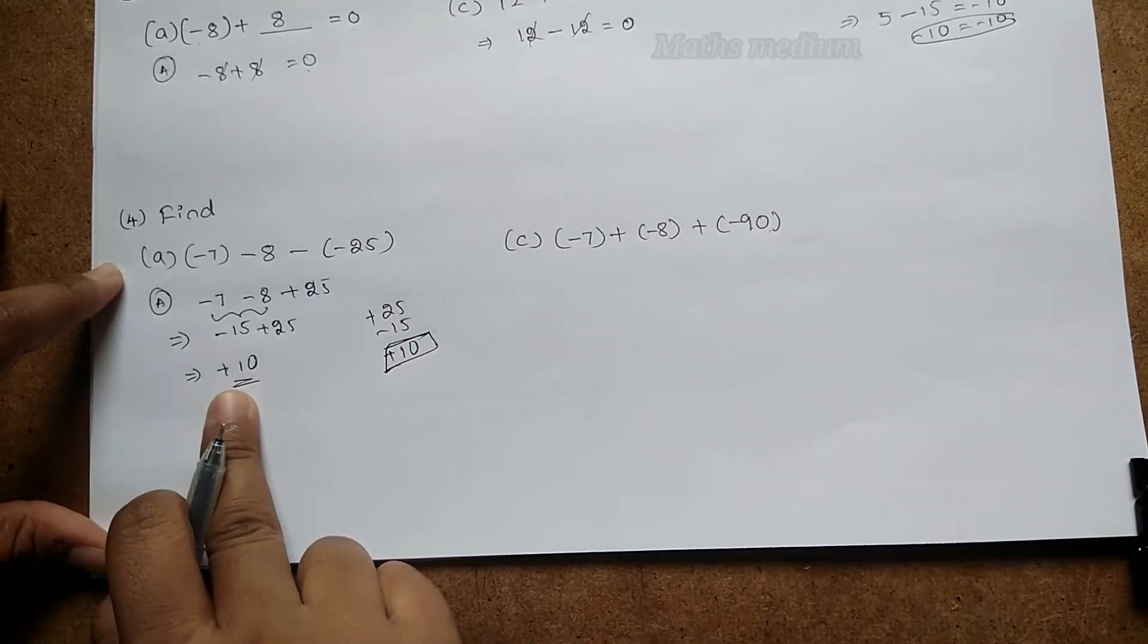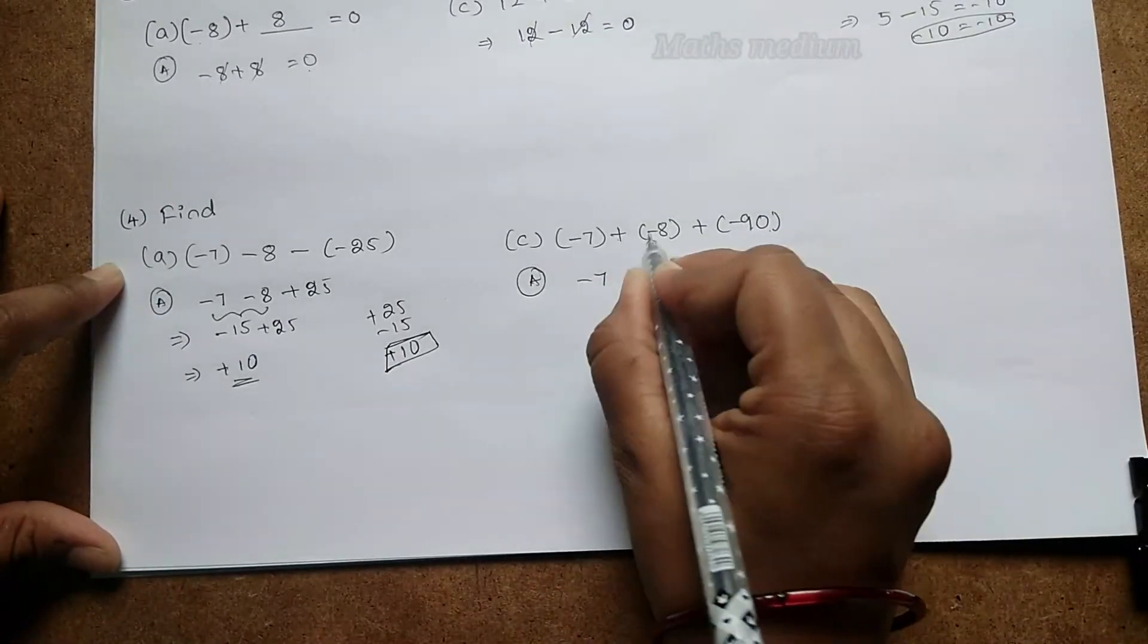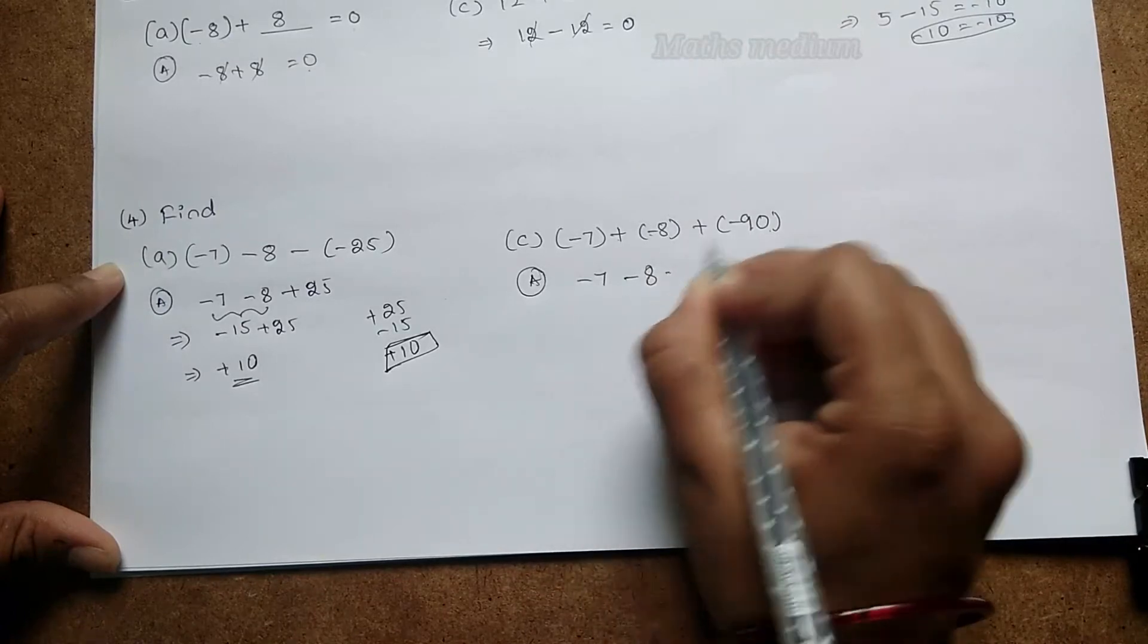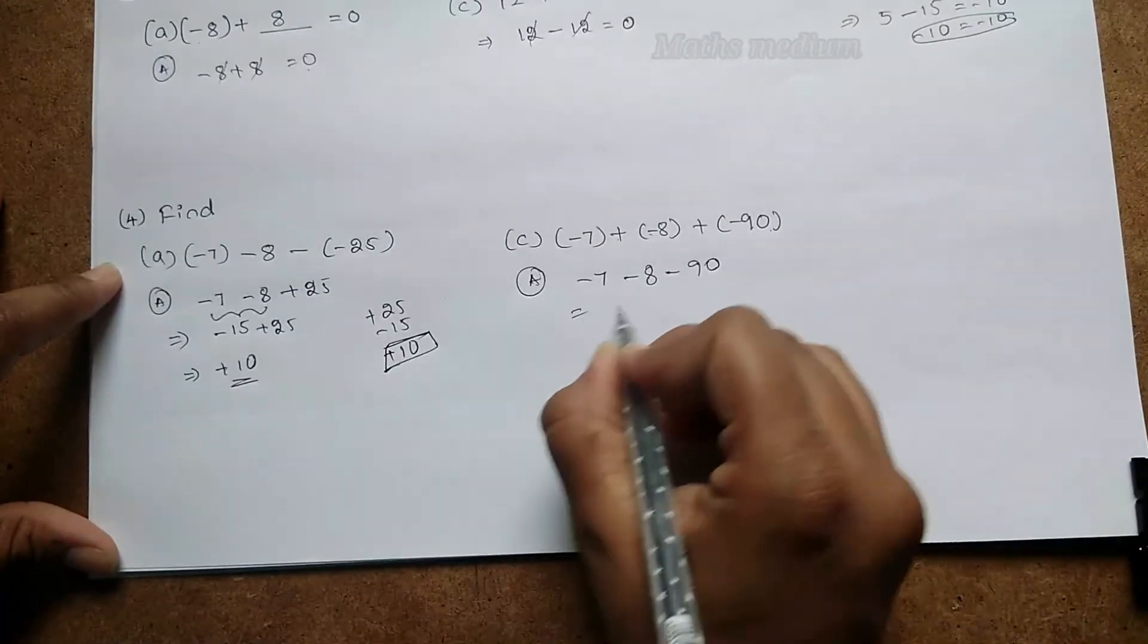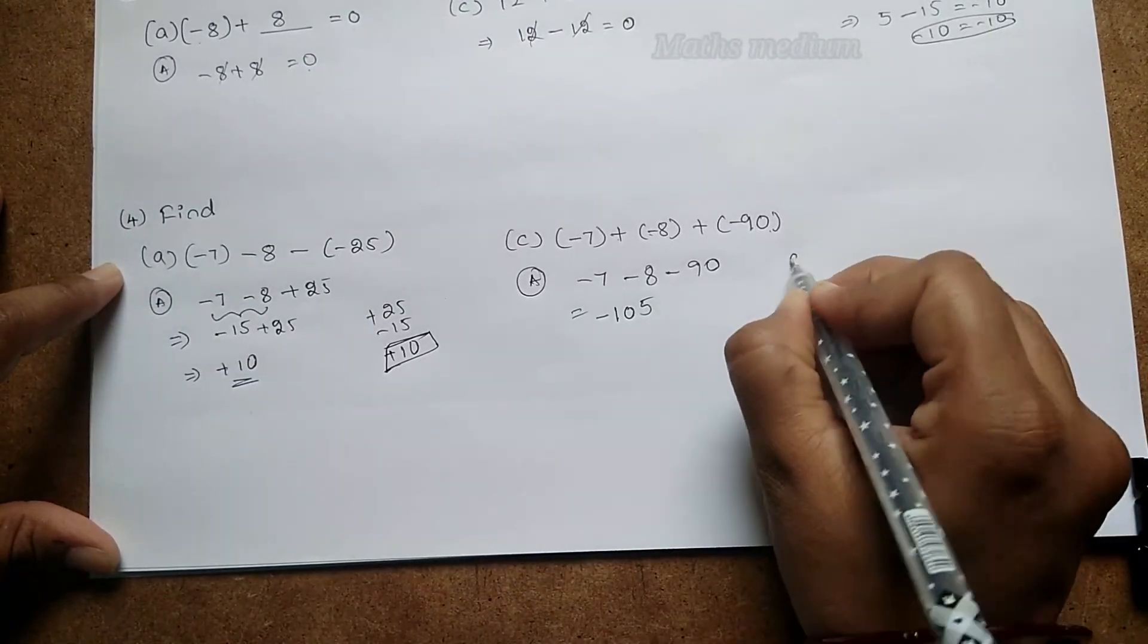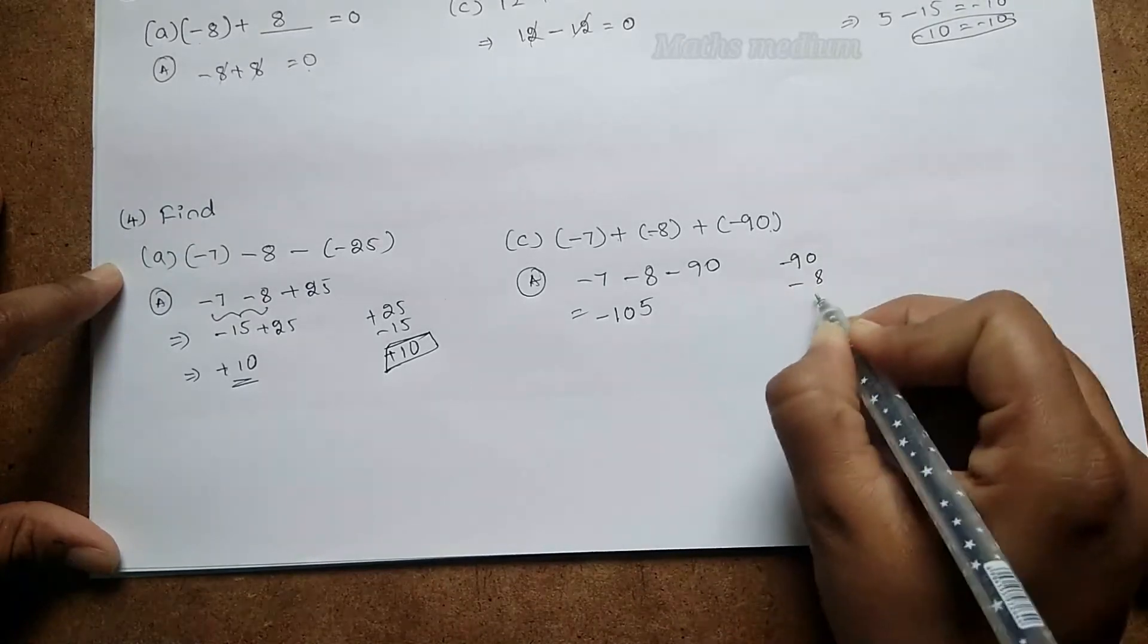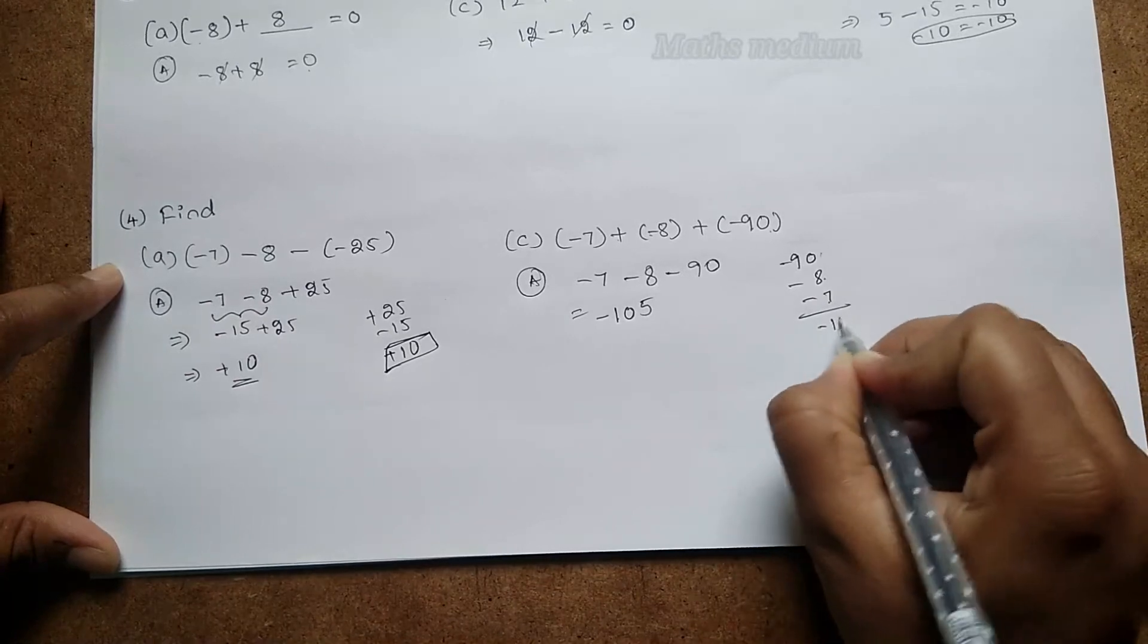Next coming to this one: (-7) + (-8) + (-90). So here the answer is -105. See here, -90 - 8 - 7 = -98 - 7 = -105. This is the answer.